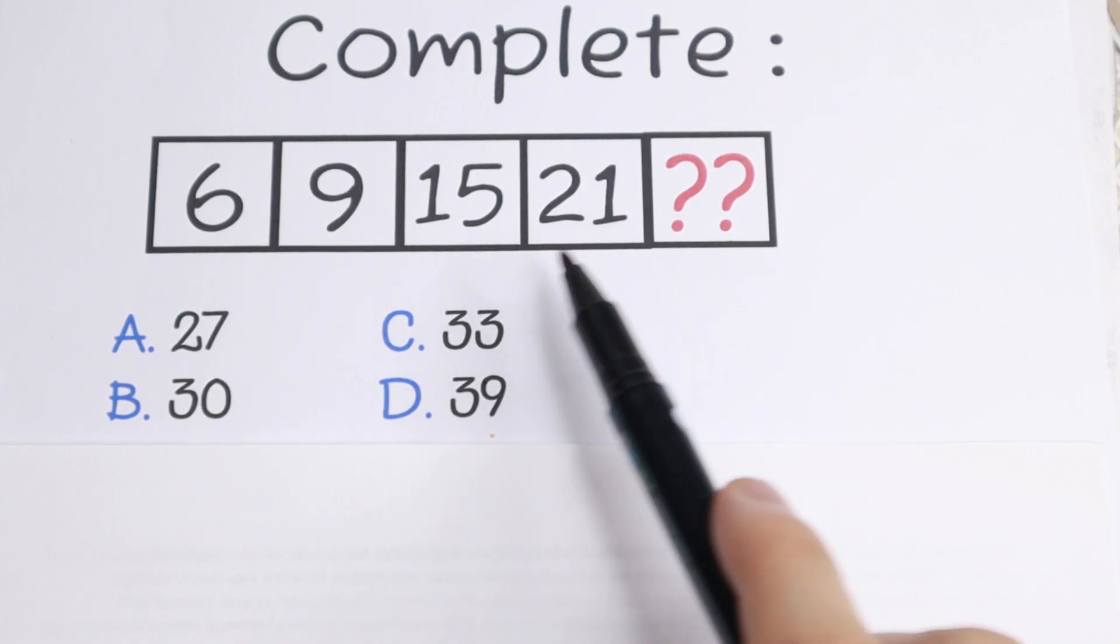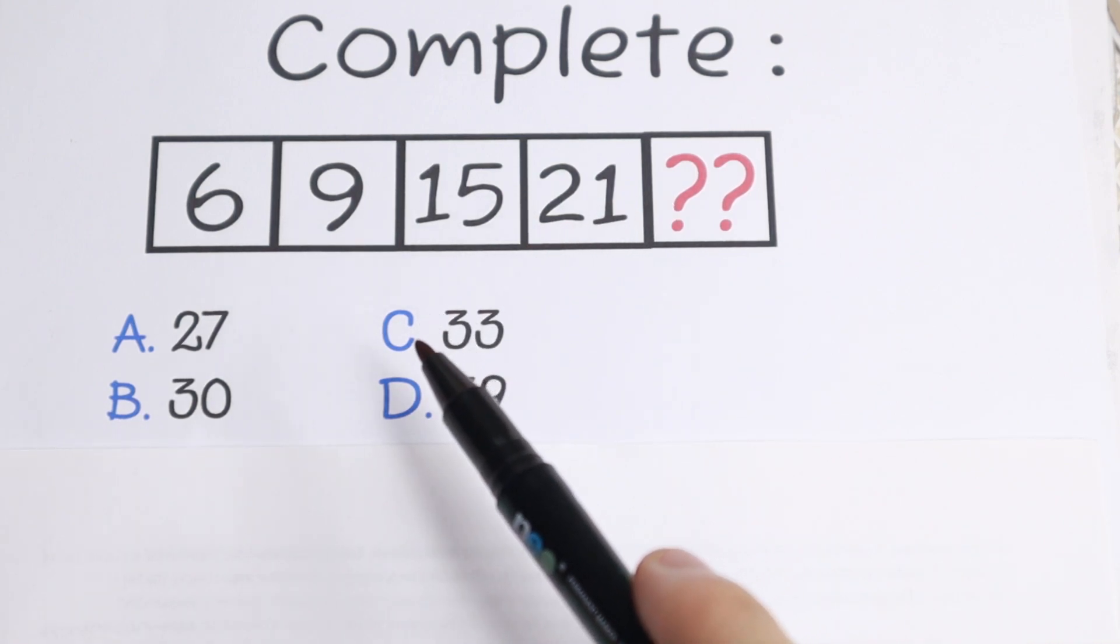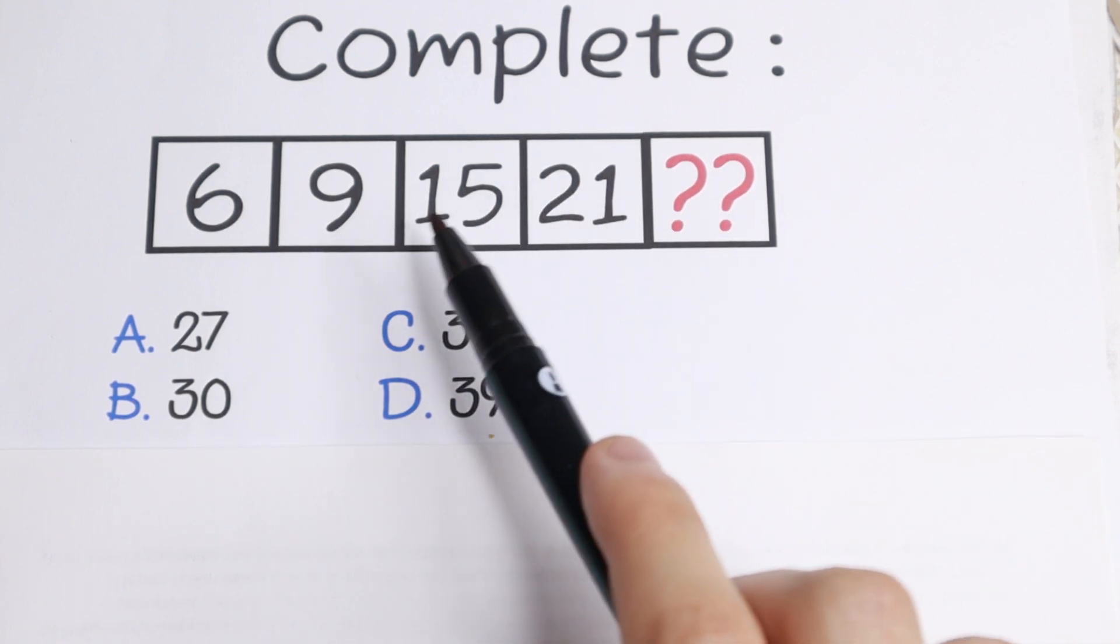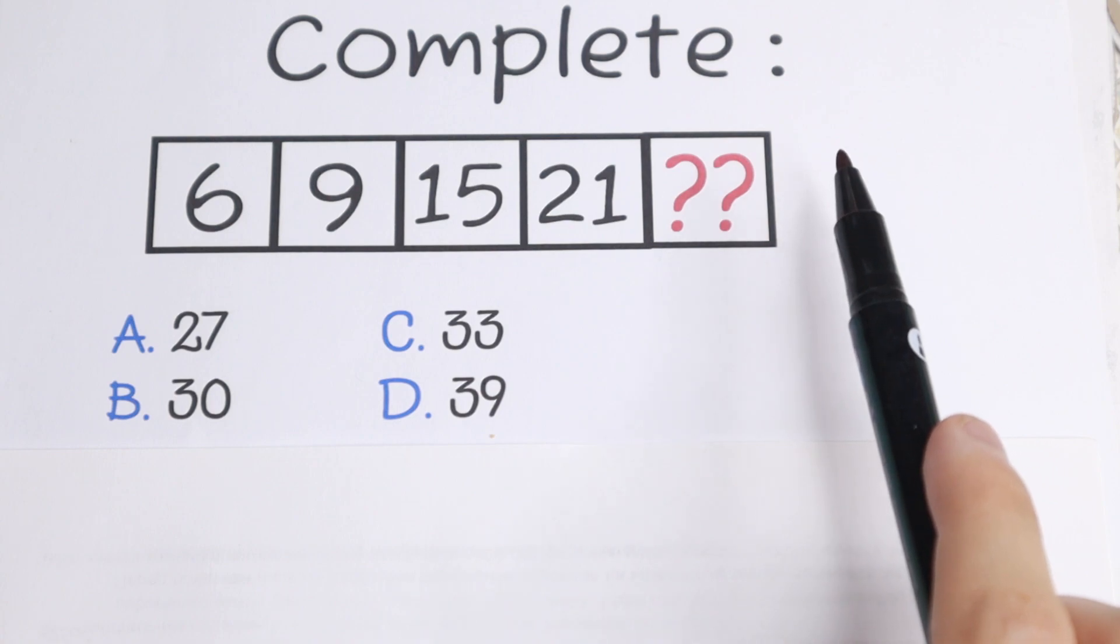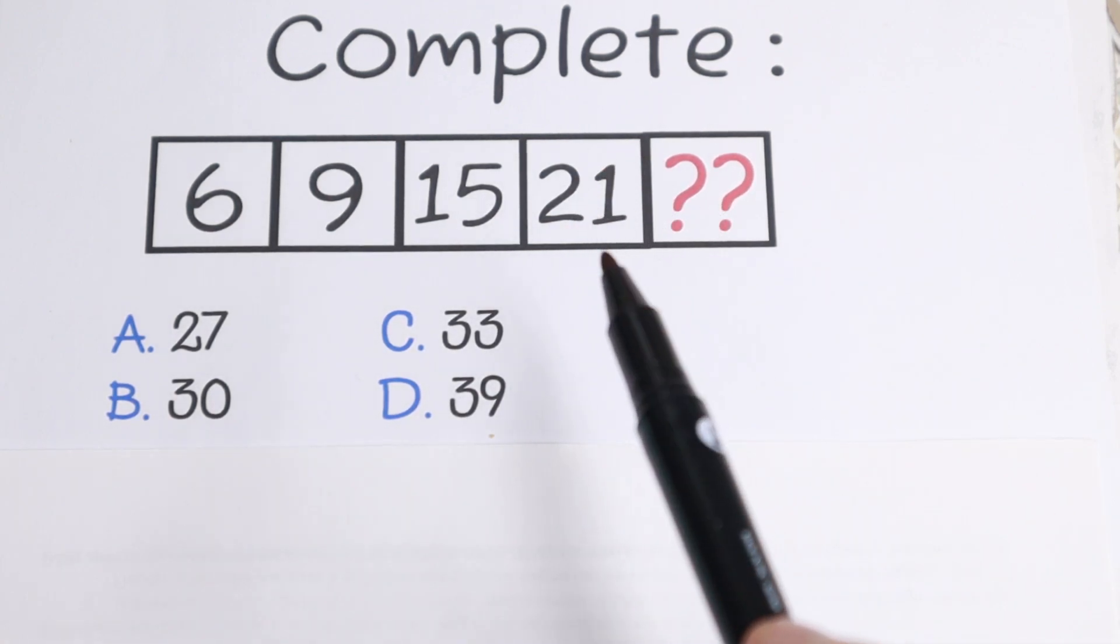We need to find another trick, how to find the last number right here. I want to show you a really good moment. Right here we have 6, 9, 15, and 21, and all of these elements can be divided by 3. So let's try to use this trick. Let's divide all numbers by 3.